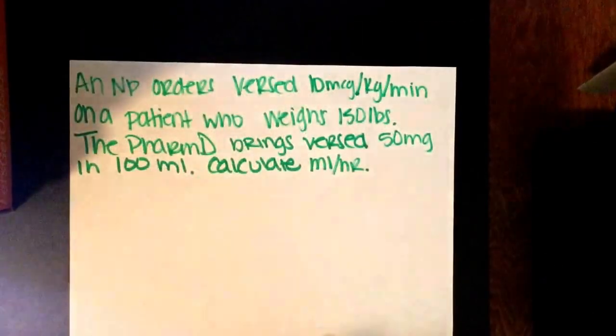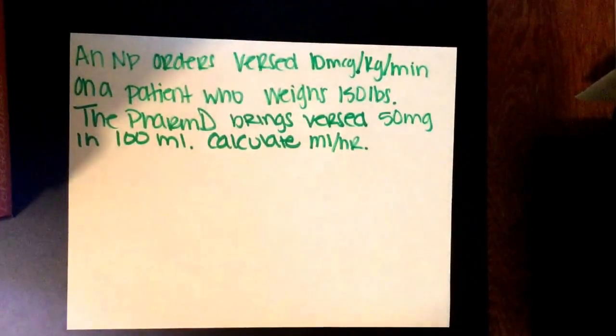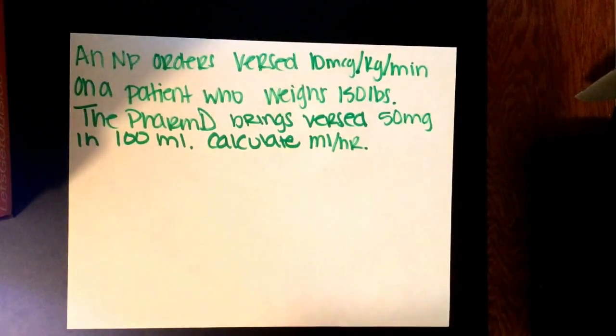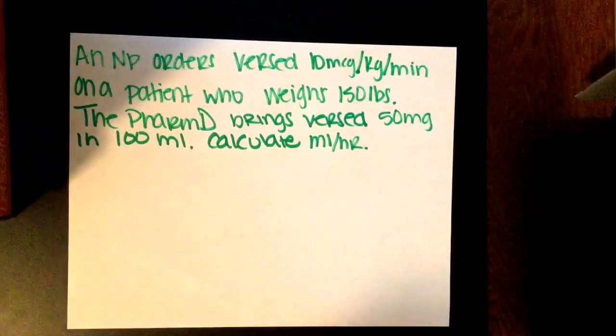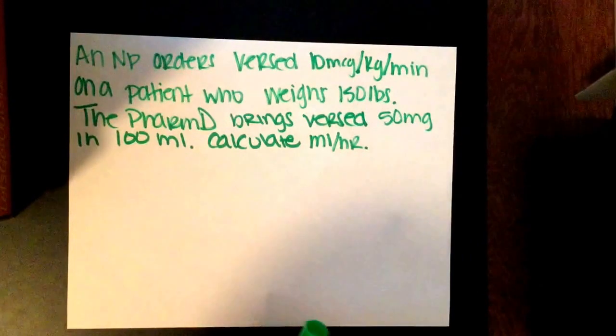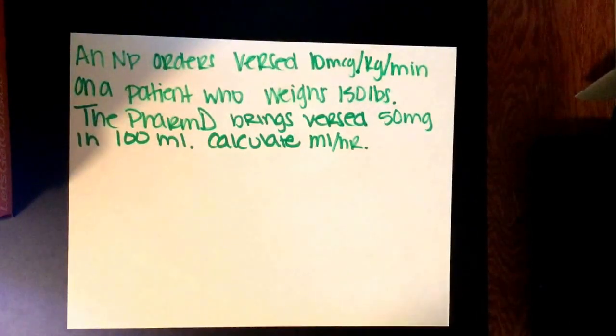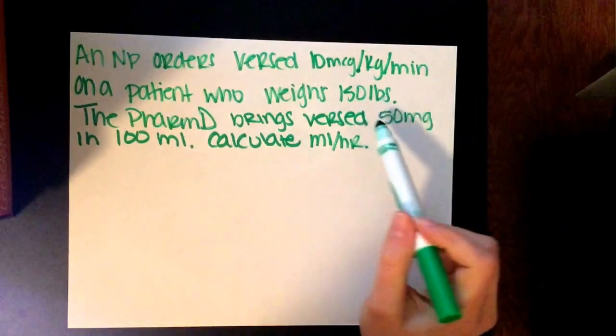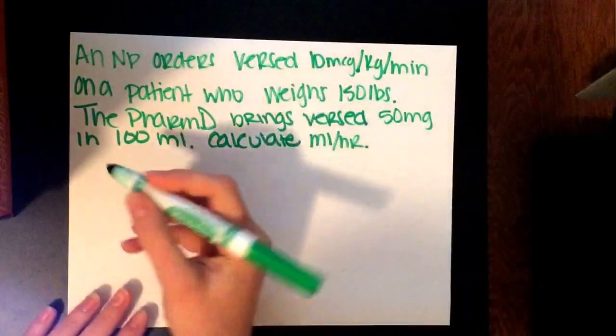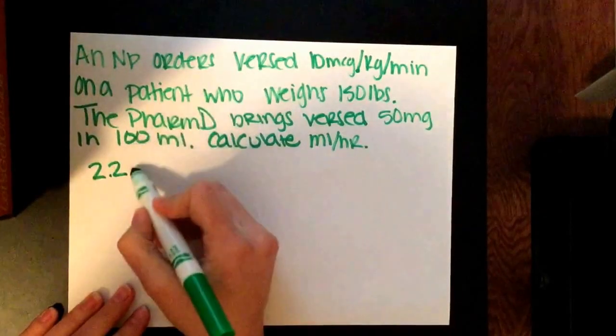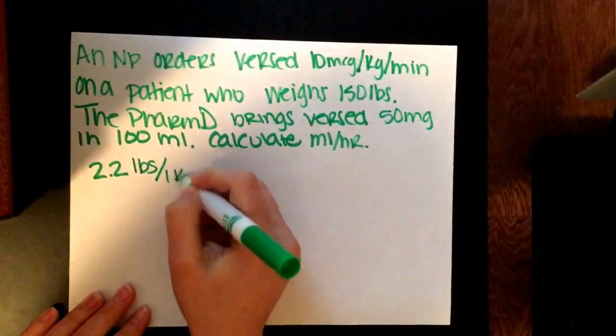Now let's go over a weight-based drug calculation problem. These problems are used with weight-based medications, mainly in ICU areas. Also in oncology, a lot of chemo is weight-based or body surface area. Let's look at this order: an NP orders Versed 10 micrograms per kilogram per minute on a patient who weighs 150 pounds. The pharmacy brings Versed 50 milligrams in 100 milliliters. Calculate the milliliters per hour.